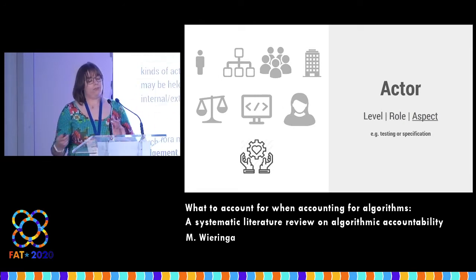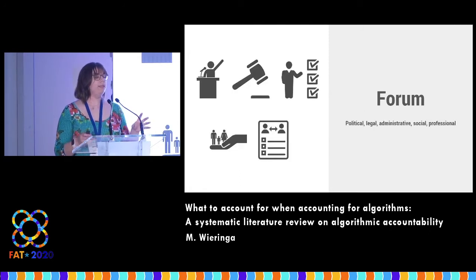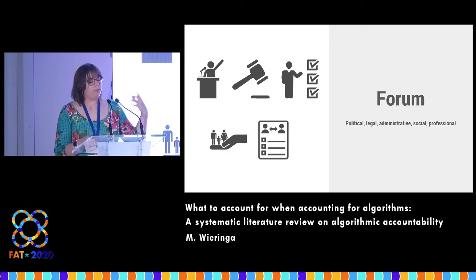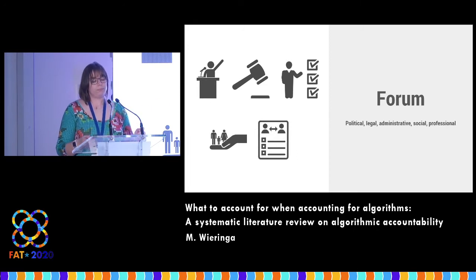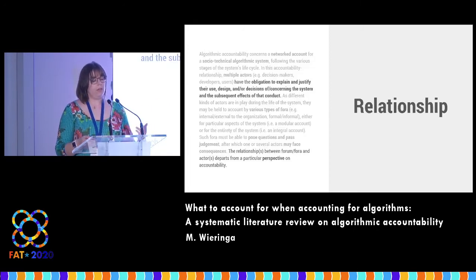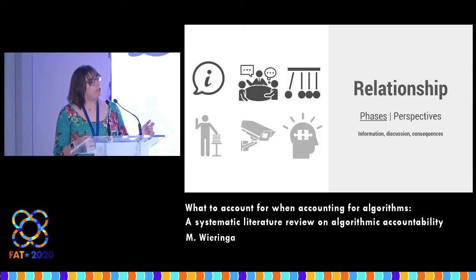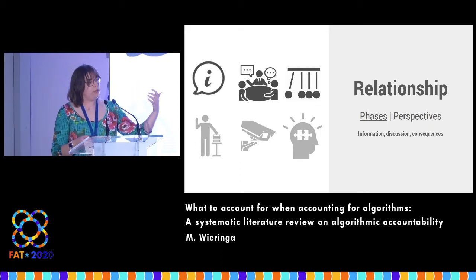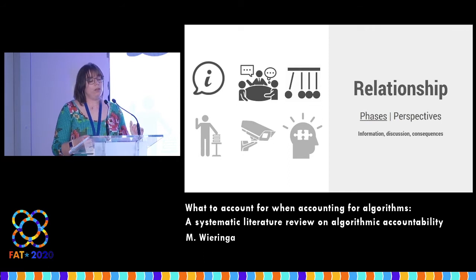Moving to the forum, there are different kinds of fora that can be involved in this relationship. A judge may pose different kinds of questions than, for instance, a politician. Looking at the relationship, two things are really key: the phases of the accountability relationship — there's an information-giving phase, a discussion phase, and then a consequences phase in which the forum can render a verdict.